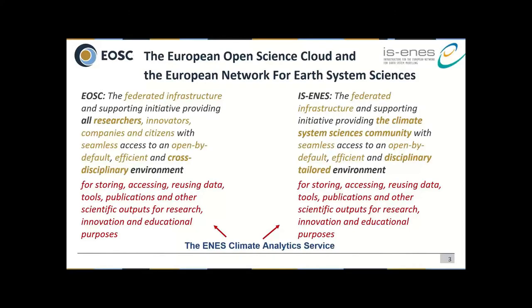The European Open Science Cloud, at a high level, is essentially a federated infrastructure targeted to support all researchers. It wants to provide a cross-disciplinary environment for storing, accessing, and reusing data. On the other hand, we have ENAS, which is also a federated infrastructure, but it's essentially targeted for the climate and earth system sciences community.